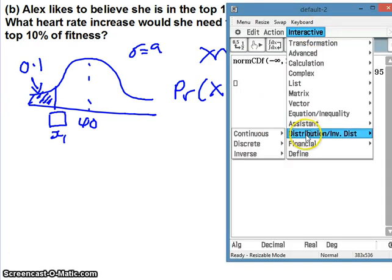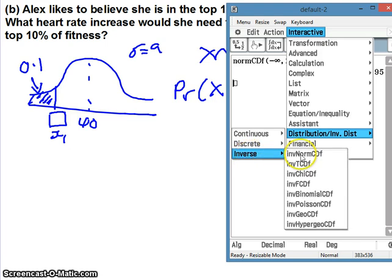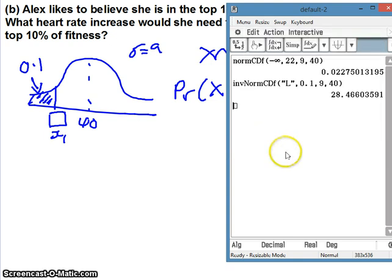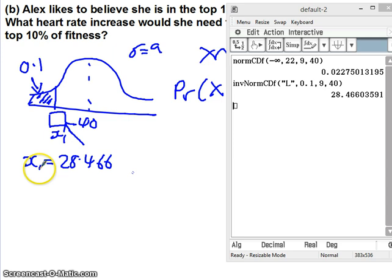Go to interactive distribution, this time it's inverse, and we want invnormCDF. We'll have left-hand settings, it's left there. Probability is 0.1 and it's 9 and 40. If we then click okay, it'll tell us 28.466 is what she needs. This is the maximum increase that Alex could have if she was to be considered in the top 10% for fitness.